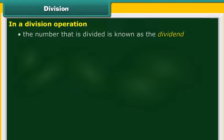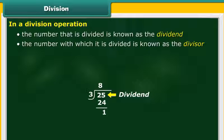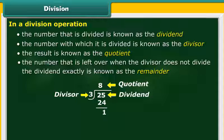Division. In a division operation, the number that is divided is known as the dividend. The number with which it is divided is known as the divisor. The result is known as the quotient. And the number that is left over when the divisor does not divide the dividend exactly is known as the remainder.